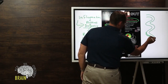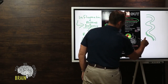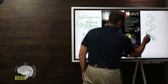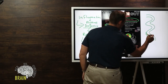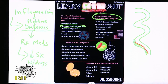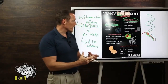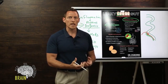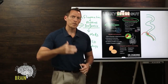Each one of these cells on the surface produces mucus. Think of the top of these cells — we'll make the mucus red — so mucus coats the top of these cells. What NSAIDs do is destroy that mucus lining and expose the cells underneath.